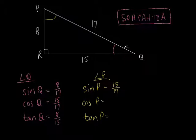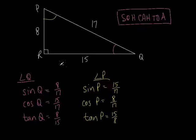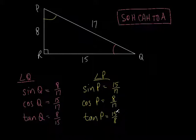The cosine of angle P: adjacent over hypotenuse. Adjacent to angle P is 8, hypotenuse is 17, so cosine of P is 8 over 17. The tangent of angle P: opposite over adjacent — opposite is 15, adjacent is 8, so tangent of P is 15 over 8. Those are all six trig functions — three for Q, three for P. The reason they ask you to do these problems is so you understand which ratio is which.